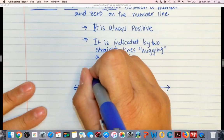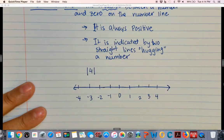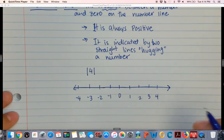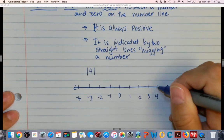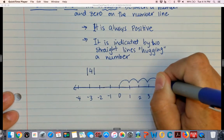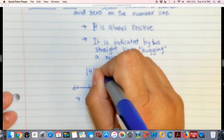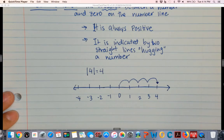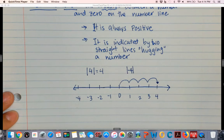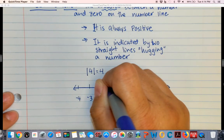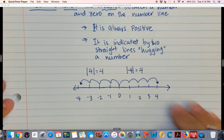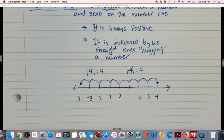So the absolute value of 4, so you can see those are two straight lines they're hugging the 4, means how far is this number 4 away from 0. And you can see that it is 4 places. Just like the absolute value of negative 4 is also 4 places away from 0. So the answer is always 4.